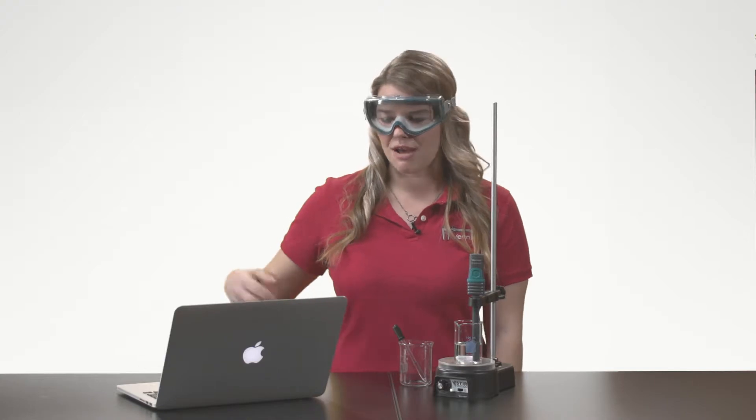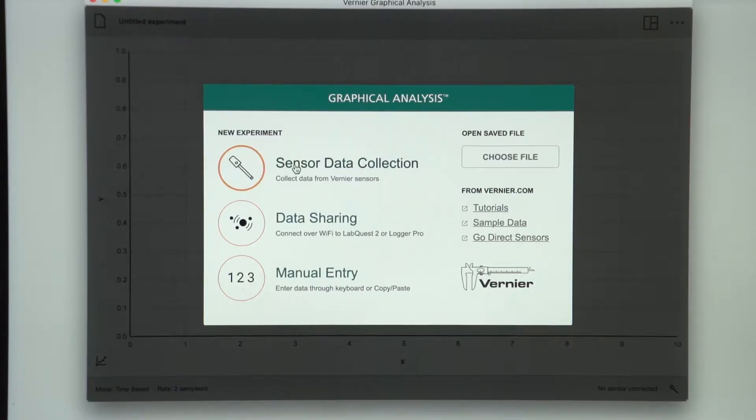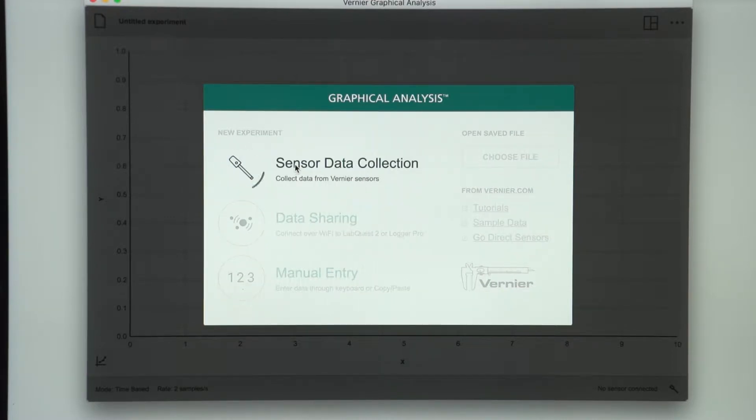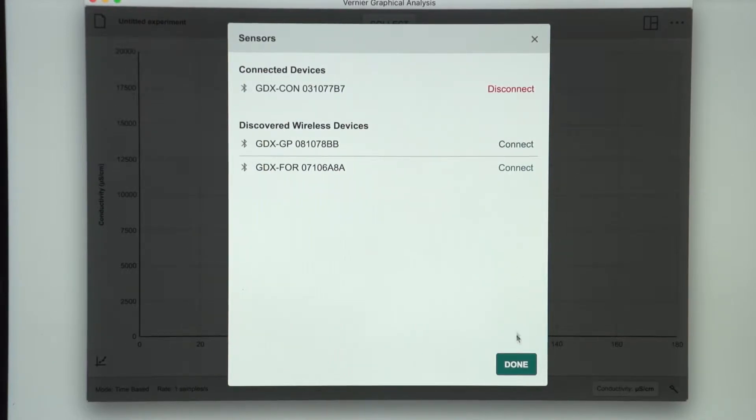Then I will launch the Graphical Analysis 4 software and select Sensor Data Collection. I then connect my conductivity probe and select Done.